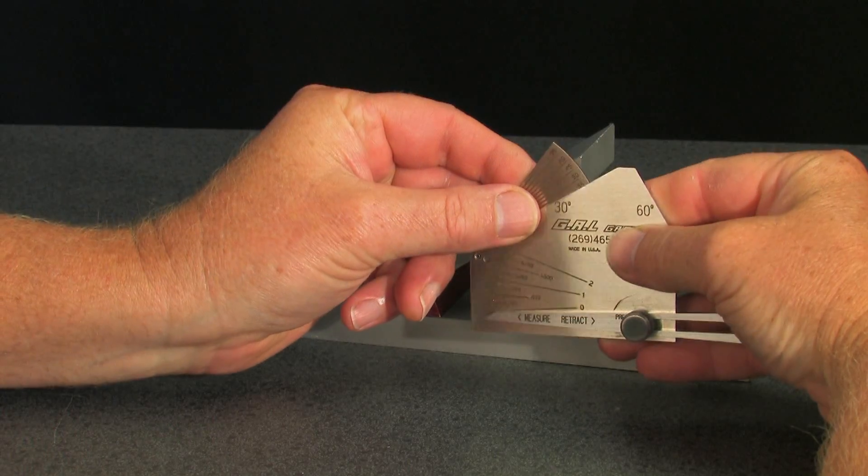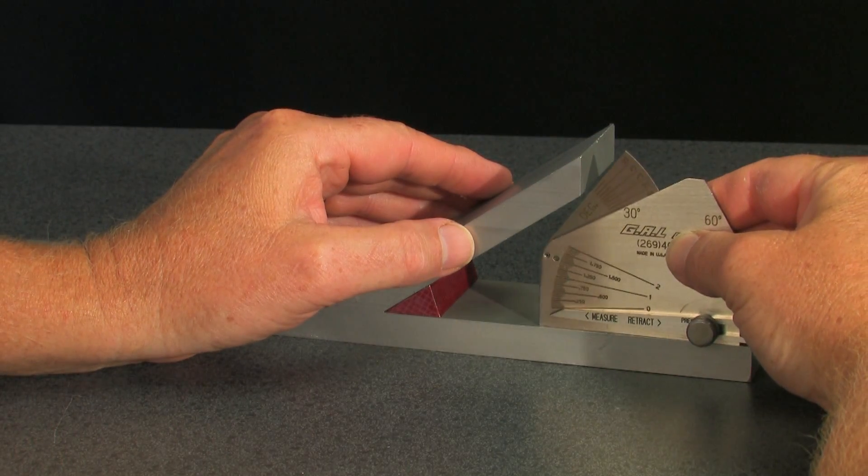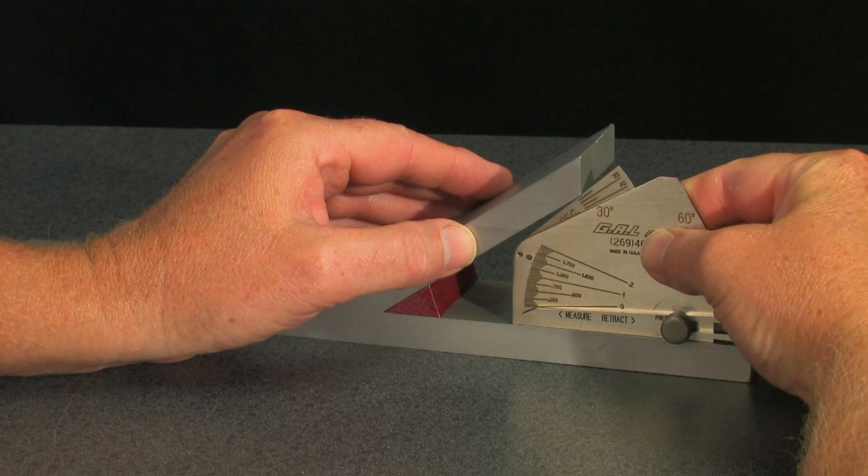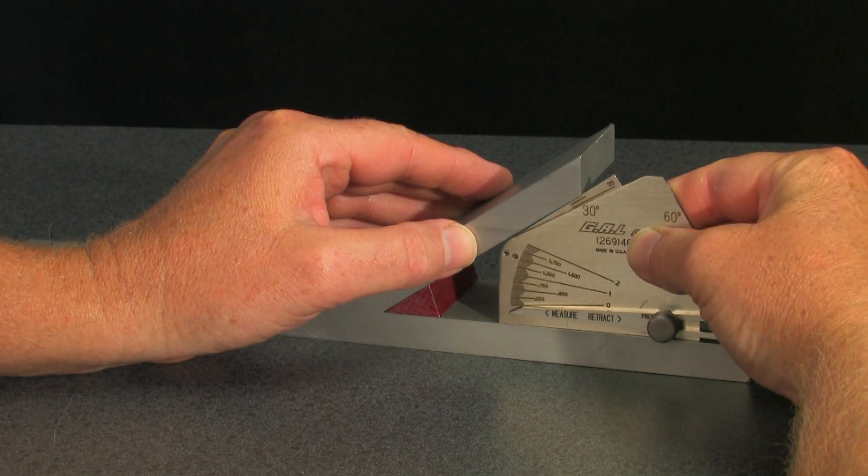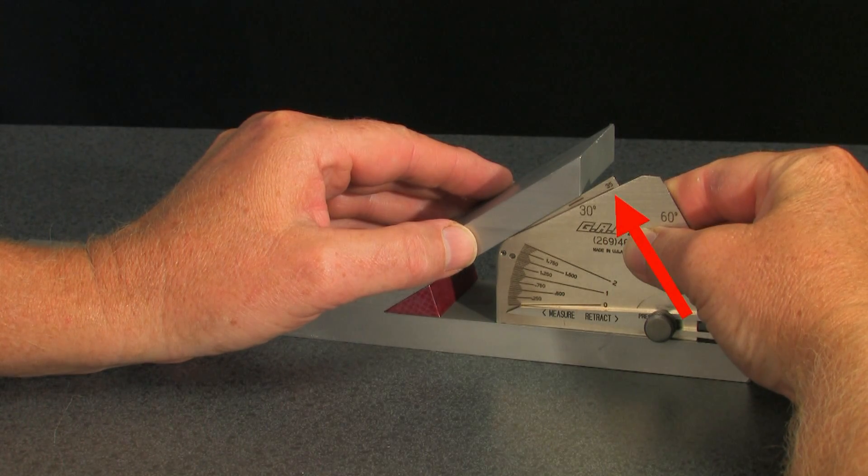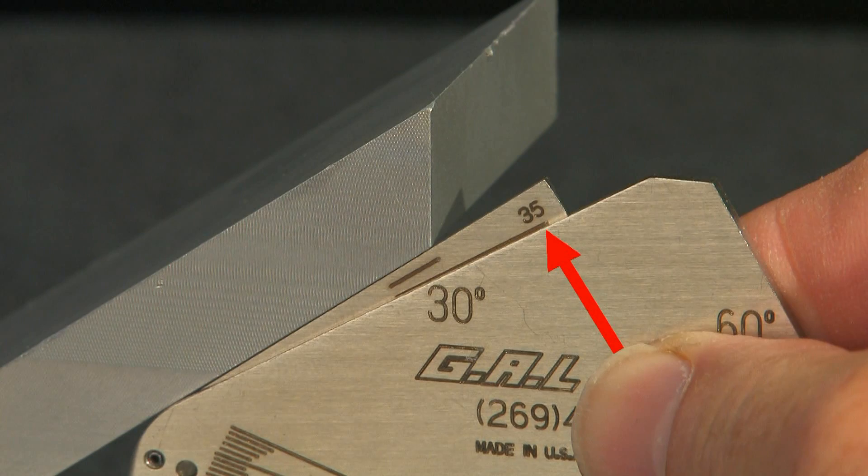To measure the dihedral angle, place the gauge on one of the members and slide forward until the rotating plate comes in complete contact with the other member. The angle can then be read from this scale. This angle measures 35 degrees.